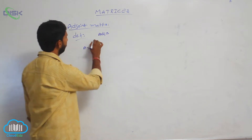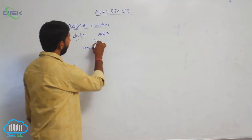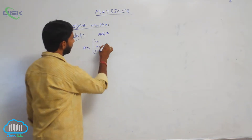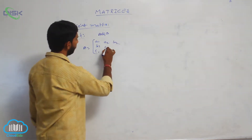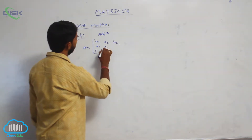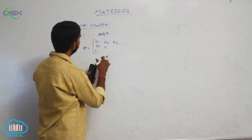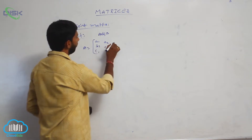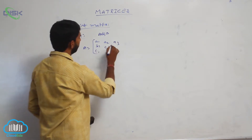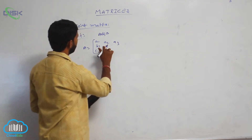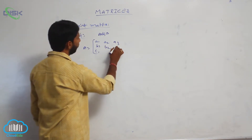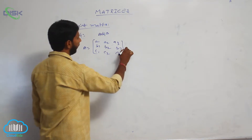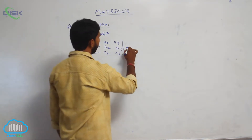Suppose if A is equal to the 3x3 matrix with elements A1, B1, C1 in the first row; A2, B2, C2 in the second row; and A3, B3, C3 in the third row.